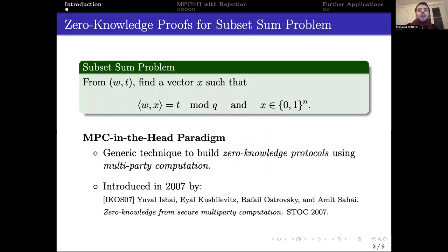Given a weight vector w and a scalar t, the subset sum problem consists of finding a binary vector x such that we have this linear relation modulo some value q. In practice, q is very large. For example, it can be a 256-bit value. To design zero-knowledge proofs of knowledge for this problem, we chose to rely on the MPC-in-the-head paradigm.